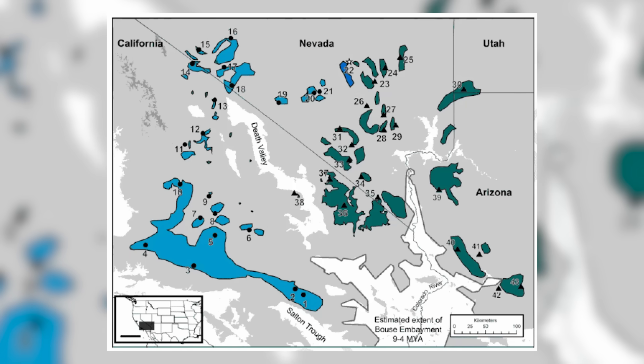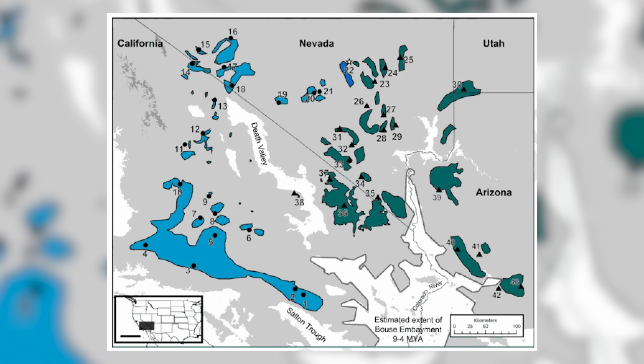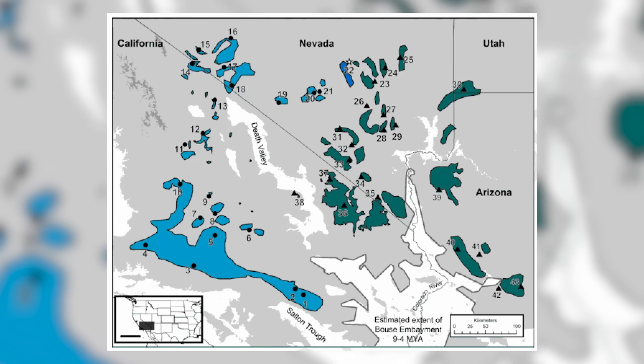There are western Joshua trees, which are the ones you will find in Joshua Tree National Park, and then there are eastern Joshua trees found in Arizona and Nevada, and then there's a third subspecies as well. Some taxonomists would argue that the eastern Joshua tree is actually its own distinct species. We'll leave that for them to figure out.